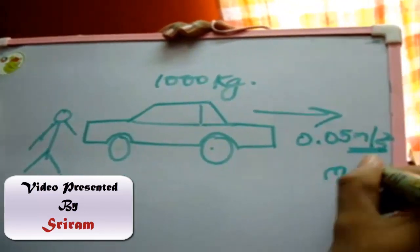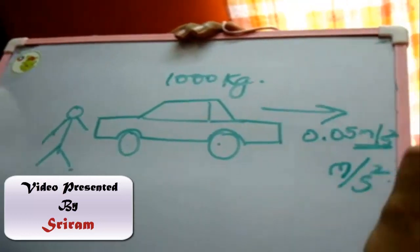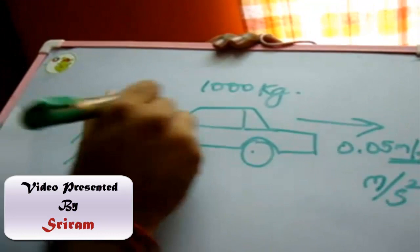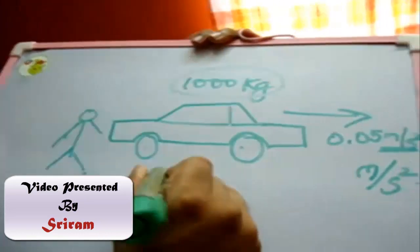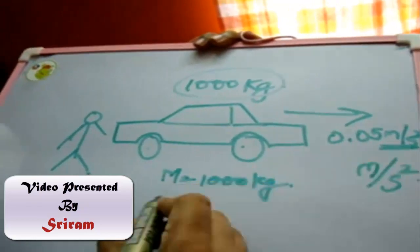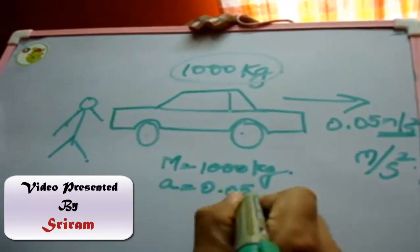We know the mass of the object, that is mass is equal to 1000 kg, and the acceleration required is 0.05 meters per second square.